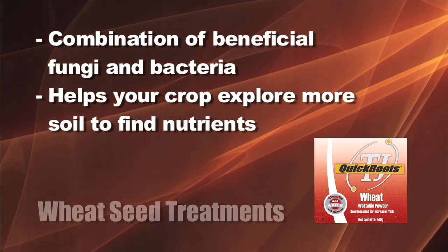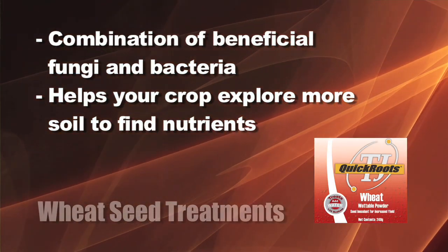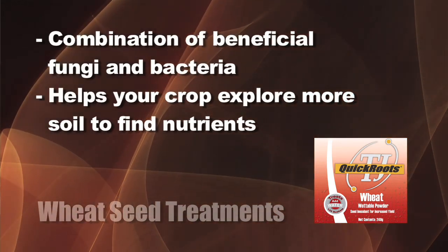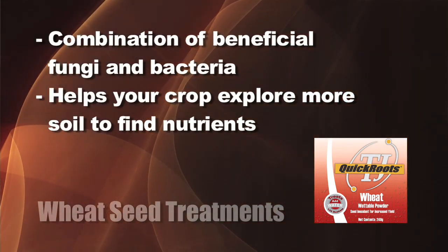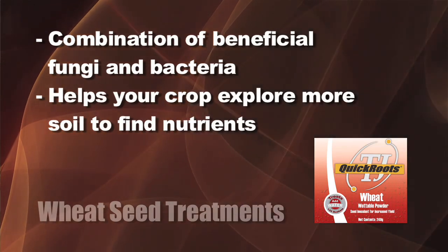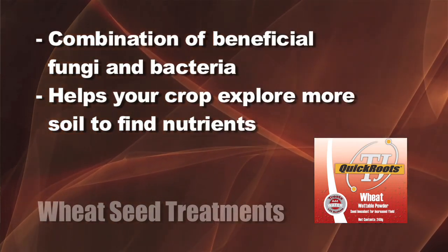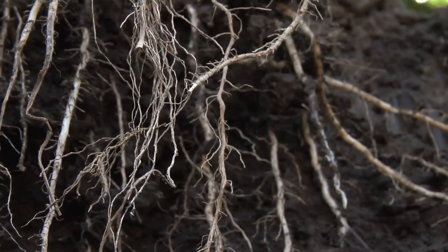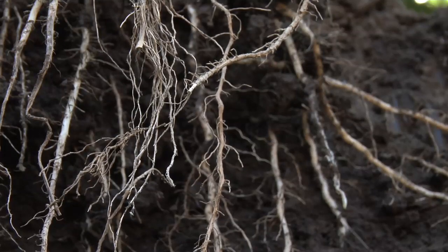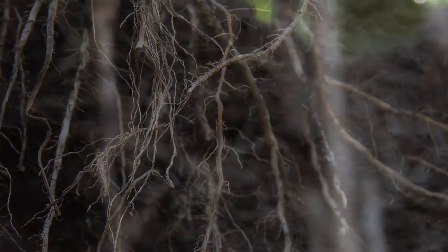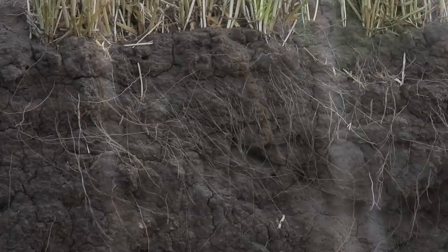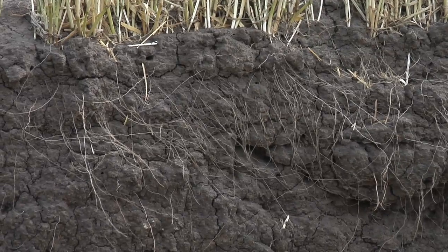Quick Roots is a combination of beneficial bacteria and fungi. You might say, 'Wait a minute — bacteria and fungi? Why am I adding those things? Aren't they bad?' No, these are beneficials that will actually help your crop explore more of the soil to find more nutrients. The fungi will penetrate into the root hairs — it's very, very small — and the bacteria will colonize around those fungi extensions out into the soil, so they can explore more soil and bring in more nutrients.